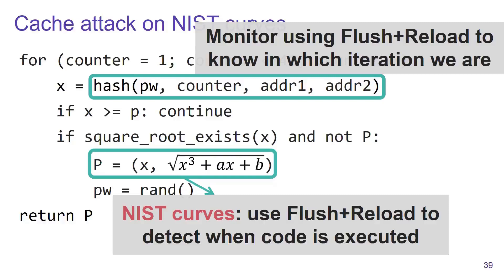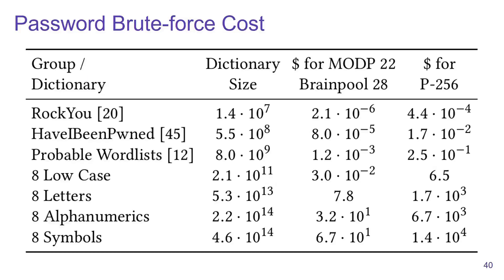We implemented the brute force algorithm on GPUs and found that if you take any dictionary or password leak, we can brute force it for less than one dollar on Amazon instances. Even if you want to brute force all 8-symbol passwords, the cost will be higher but it's still doable in practice.